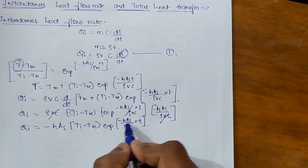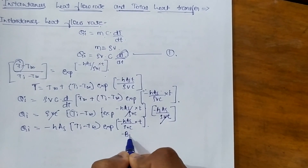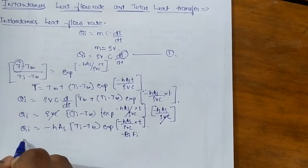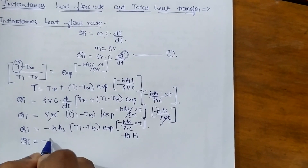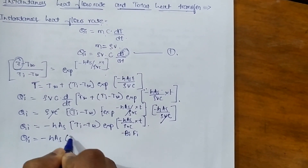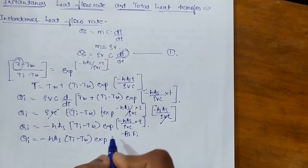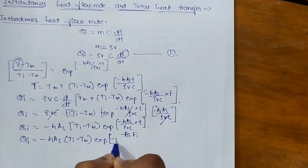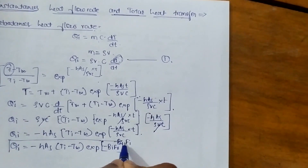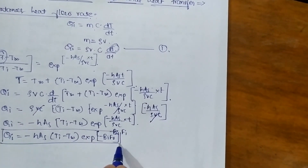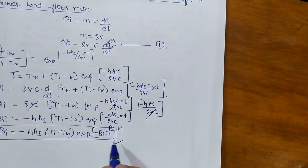In the previous video we derived that the power term equals minus of Biot number times Fourier number. So the equation for instantaneous heat flow rate becomes: qi = -h·As·(Ti - T∞)·exp(-Bi·Fo).